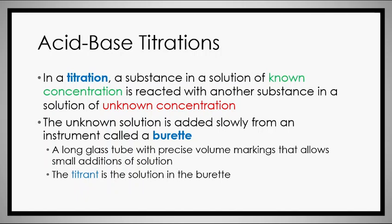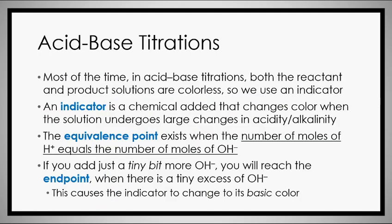With titration, you use a substance you know something about to solve for a substance you don't. A burette is a very long skinny tube used in the lab. The messed up thing about the burette is it looks numbered upside down — because the values actually measure how much volume is leaving the burette, not how much is inside at a given time.